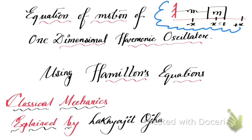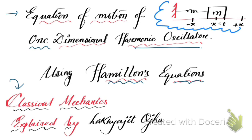Hello friends, this is another lecture of classical mechanics. Here we're going to discuss the equation of motion of a one-dimensional harmonic oscillator using Hamilton's equations of motion. Please subscribe to the channel, hit the thumbs up button, and share with your friends to inspire me to create new content for you.